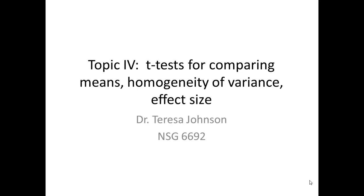Topic 4 is a discussion of the student's t-test, which is a parametric test used for comparing the means of two different groups. It's useful for comparing the means of one group measured at two points in time, or comparing one sample mean to a test statistic. We will also describe the homogeneity of variance, which is the Levene's test used when comparing two different groups, and effect size.